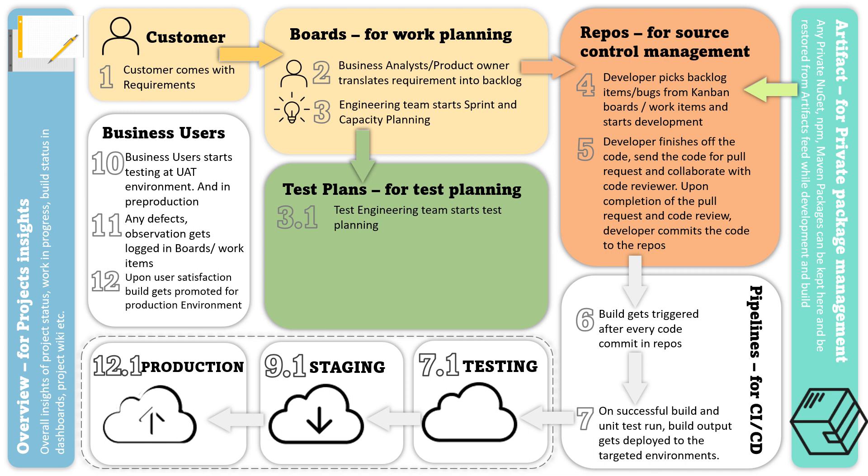Once the code is committed, Jenkins comes into the picture. It picks up the code from the repo and the pipeline that is built starts acting. The build gets triggered after every code commit in the repo. We will use the Maven tool for the build, and once the build is successful and unit tests run, the build output gets deployed to the targeted environments.